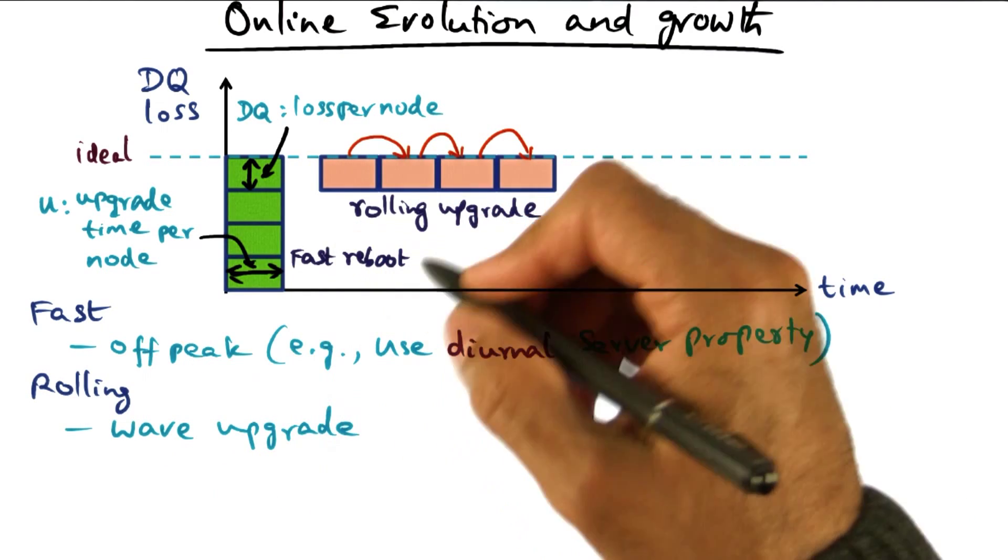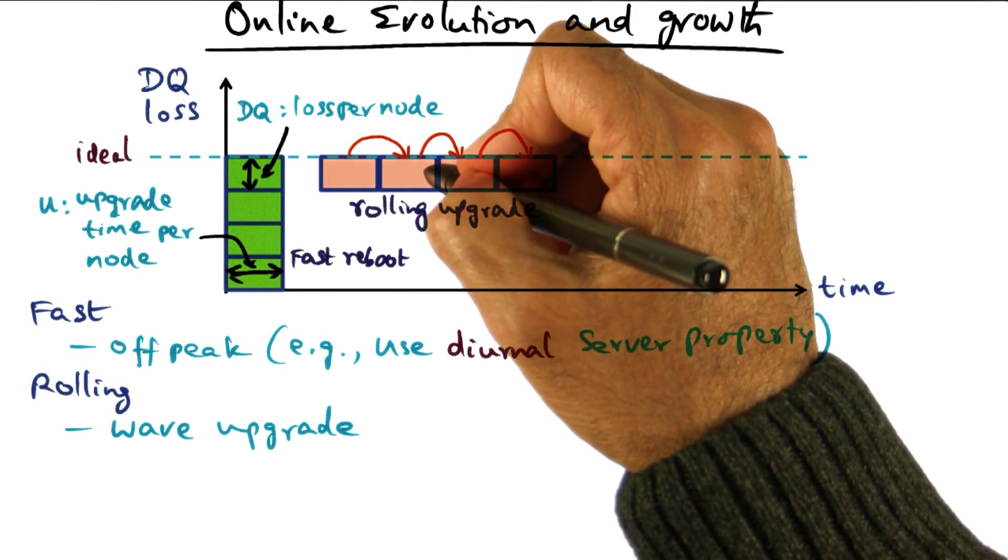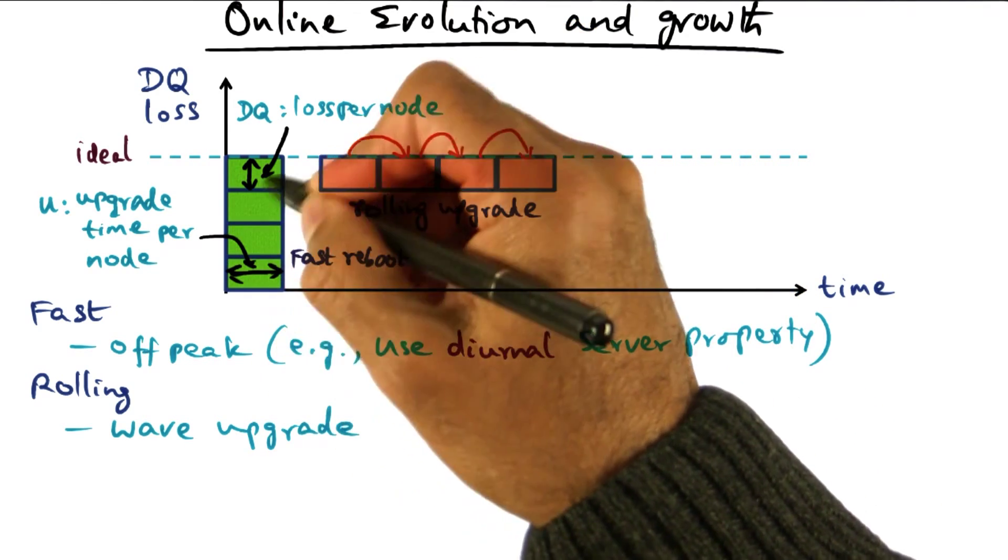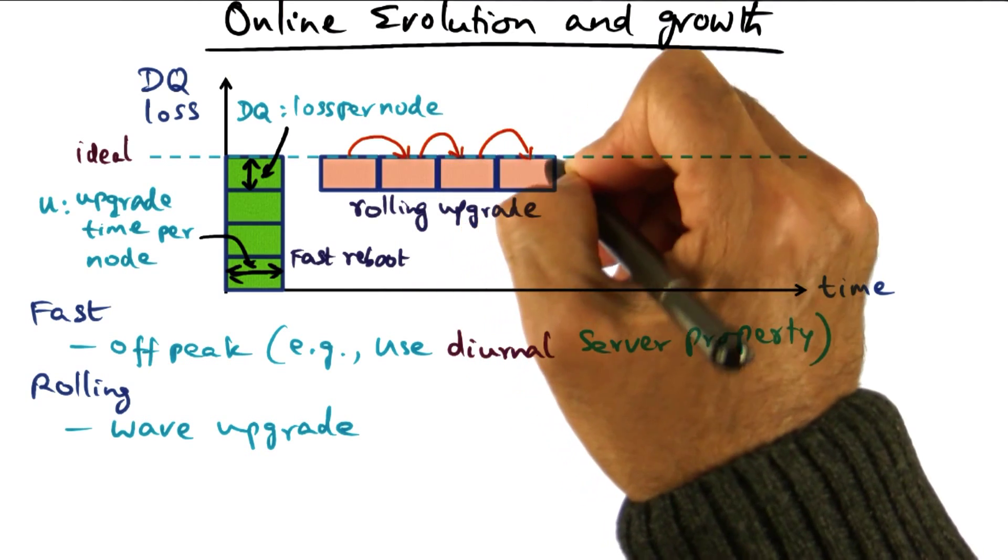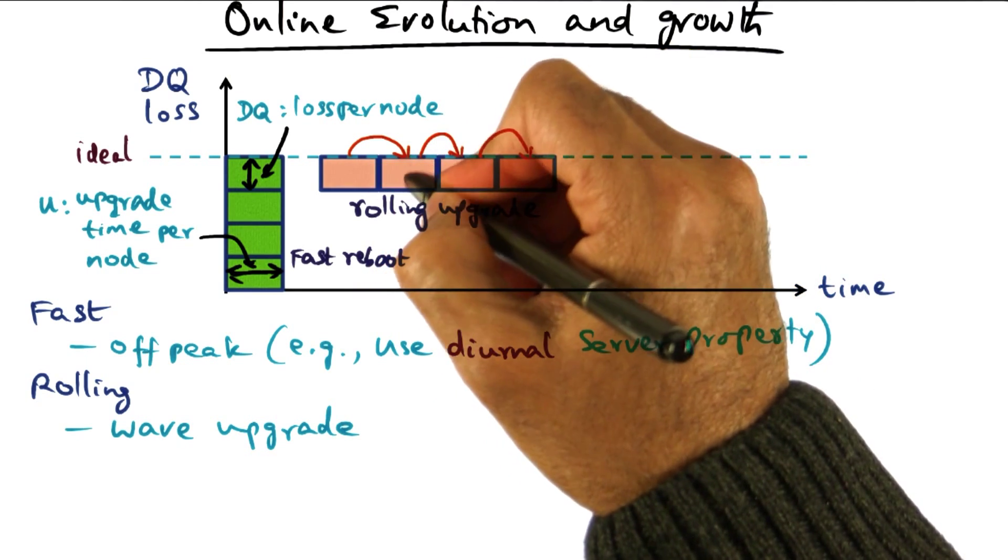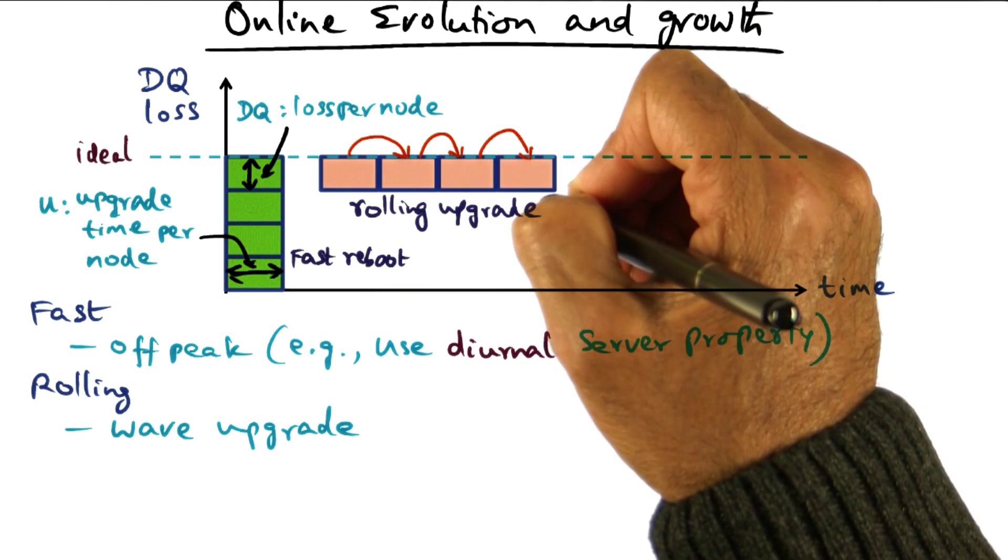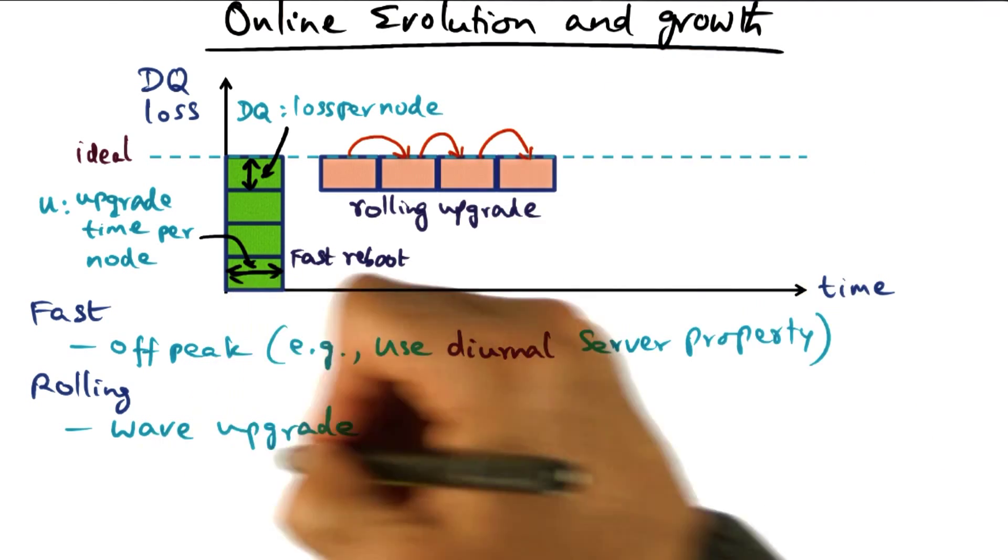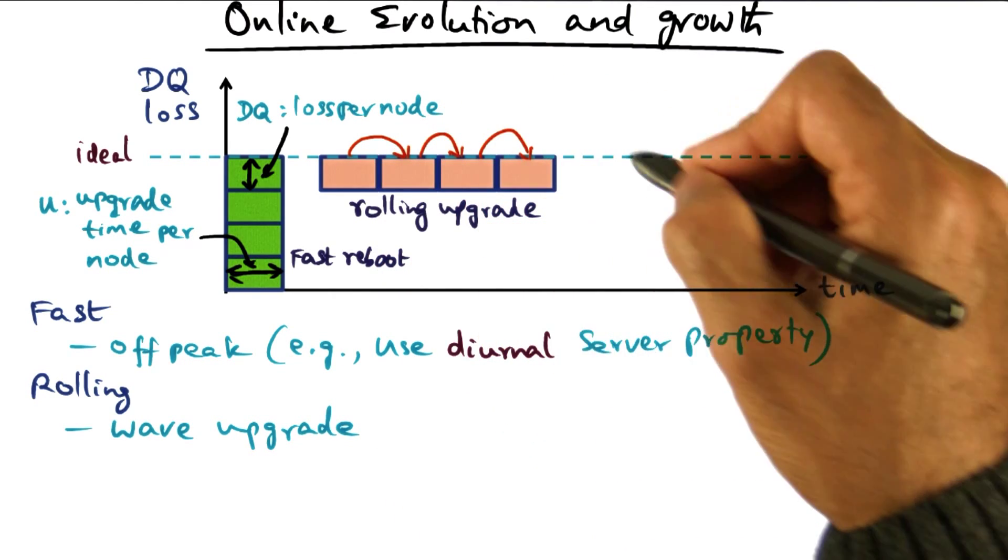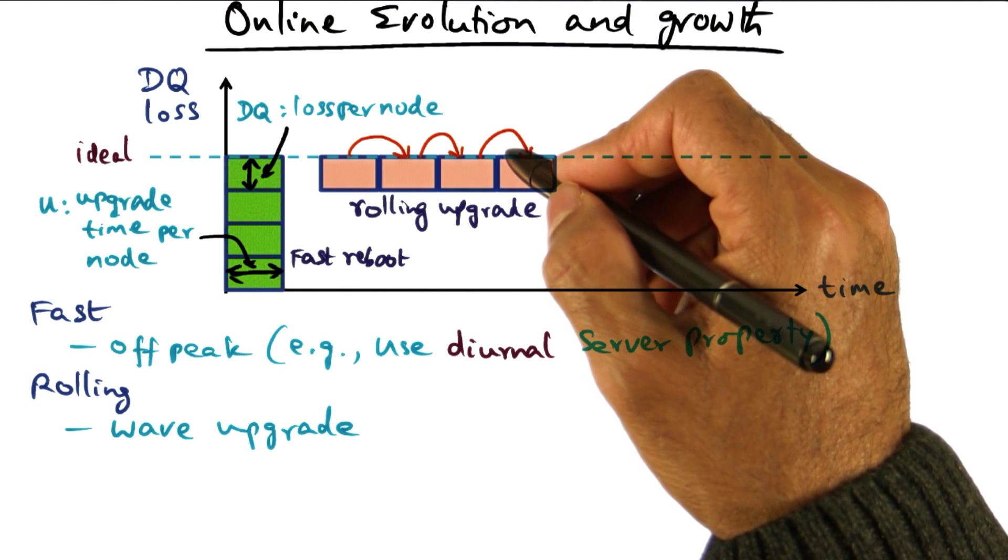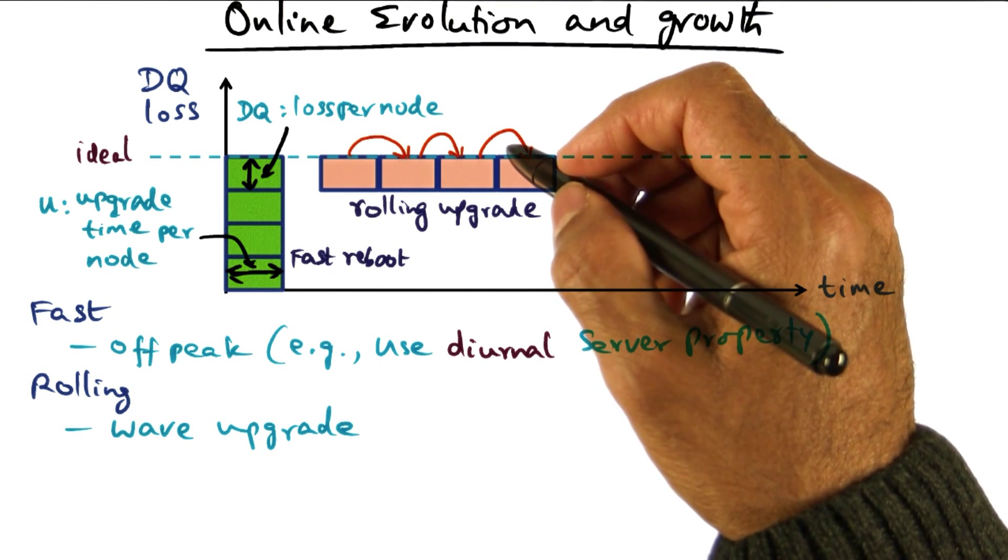An alternative to fast reboot is what is called a rolling upgrade, or wave upgrade. Now here, what we're doing is rather than bring all the servers down at the same time, we are bringing one server down at a time, and upgrading one server, bringing down the next server, upgrading it, and so on. This is what is called rolling upgrade, or wave upgrade. And in this case, service is available all throughout. There is no time that we are saying that the service is completely unavailable.